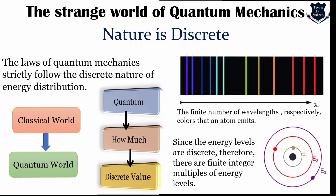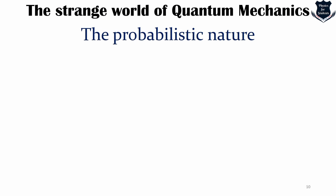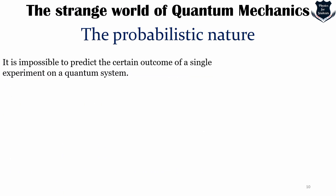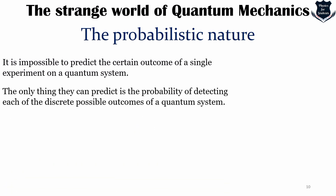The second strange phenomenon is that quantum mechanics is probabilistic in nature. These tiny objects have a probability distribution that describes their location, momentum, and other things such as whether they will spontaneously break up into smaller things. In this situation, probability is not a measure of ignorance but simply the way things work. It is impossible to predict the certain outcome of a single experiment — the only thing we can do is predict the probability of detecting each of the discrete possible outcomes.